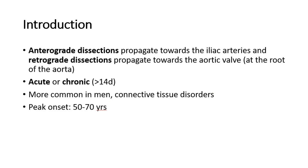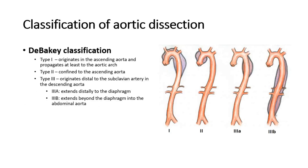They can be acute, which is less than 14 days, or chronic, more than 14 days. They are more common in men and in patients with connective tissue disorders, and have a peak onset between 50 and 70 years. There are two classifications to classify aortic dissection.